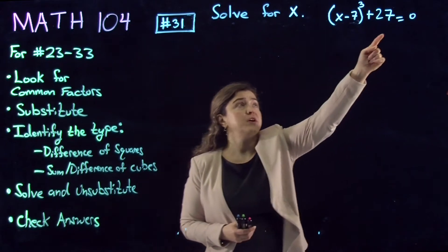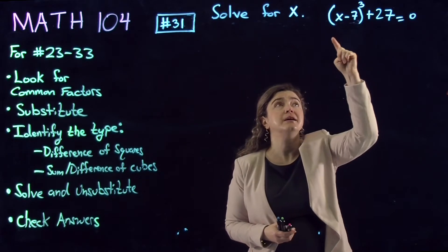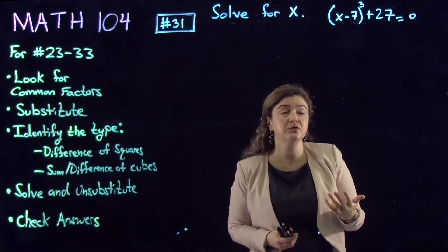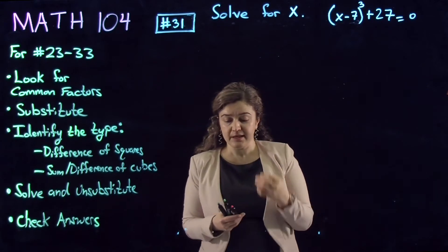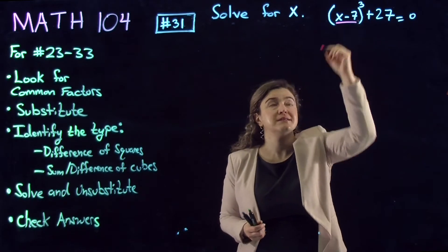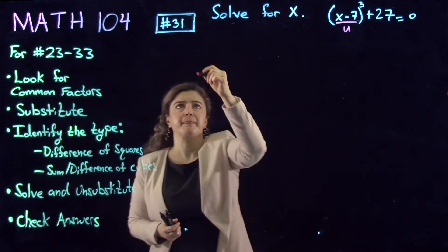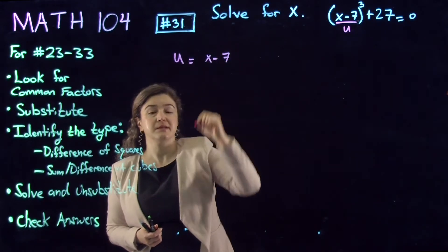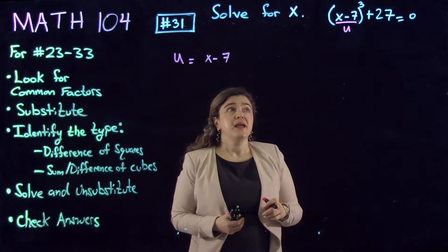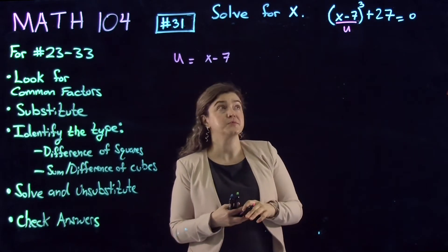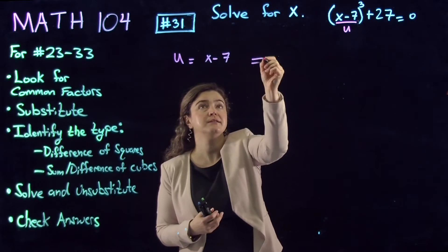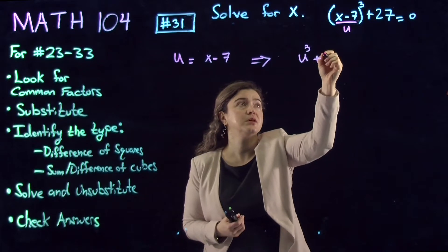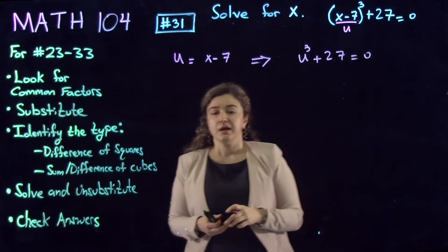Looking at the equation over here, I see that expanding (x-7)³ is going to be very difficult to do. So my first instinct is to pick x-7 as u. Substitution: u = x-7. Then substitute back in to get u³ + 27 = 0.